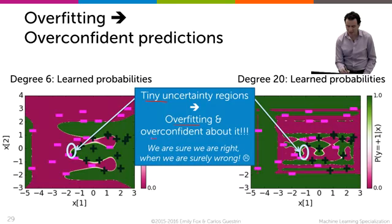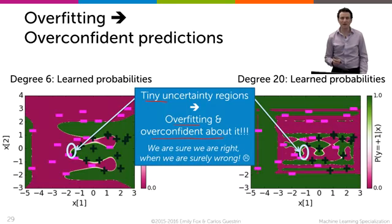And so I'm overfitting and overconfident about it. The way I think about it is that we're sure we're right when we're surely wrong about that. So we're absolutely wrong, but we're sure we're right, and that's really bad.